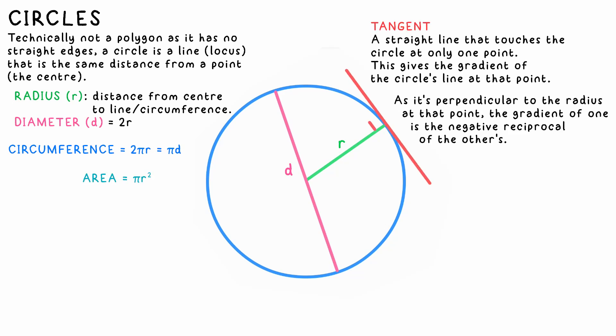A tangent is a straight line that just touches the outside of the circle at one point. This will always be perpendicular to the radius at that point.